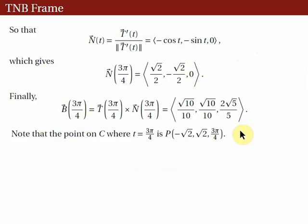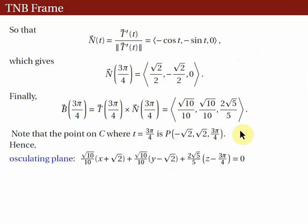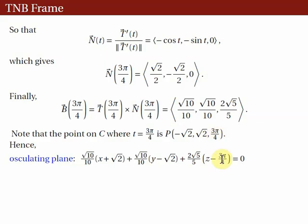The unit binormal vector B is perpendicular to the osculating plane. So the equation of the osculating plane uses B as the normal vector: first component of B times (x − (−√2)) plus second component of B times (y − √2) plus third component of B times (z − 3π/4) = 0. This is the equation of the osculating plane.